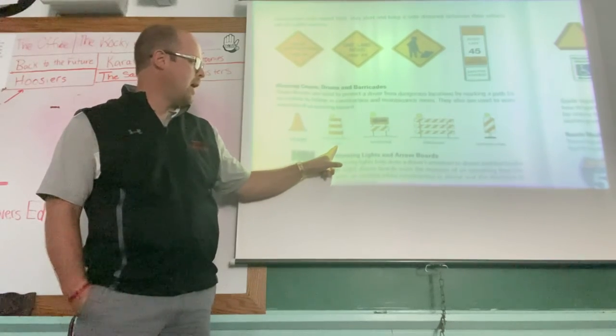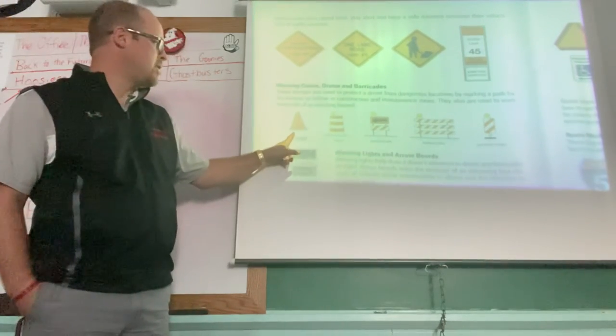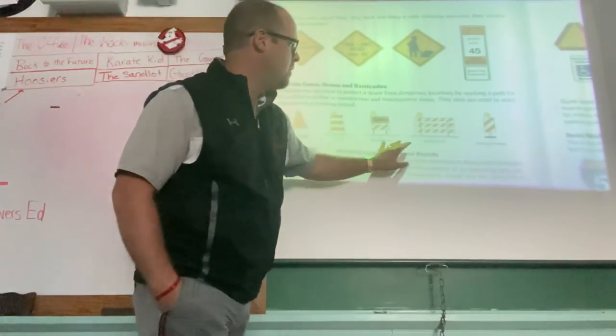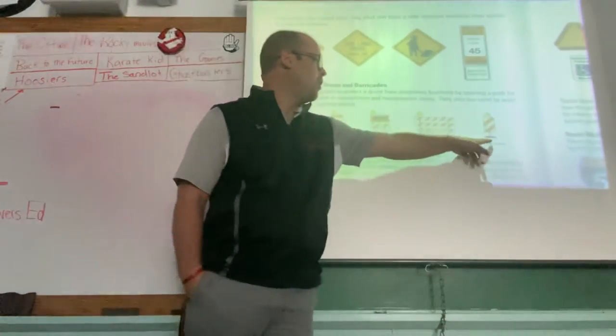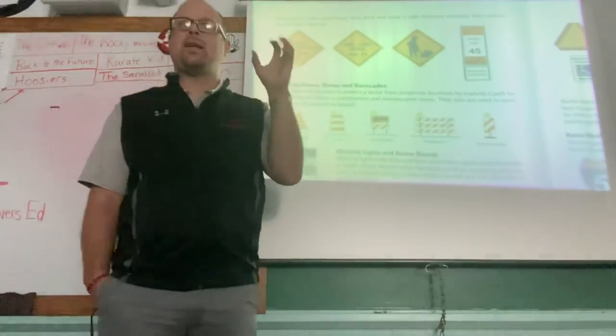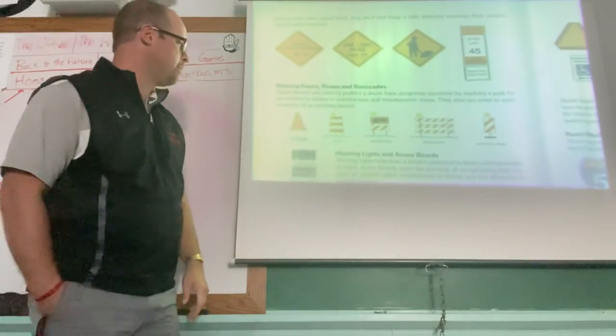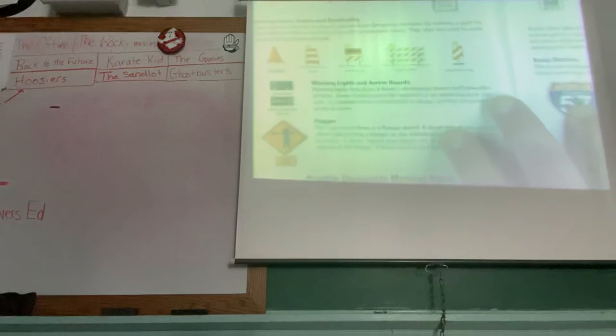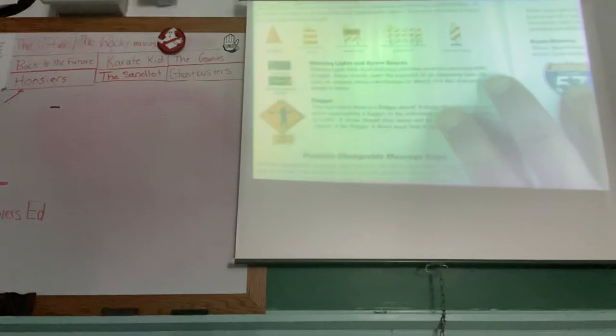Well that's not a cone. That's a drum. That's a cone, cone, drum. These are barricades. That's called a vertical panel. They all could have lights blinking on them, they may not.